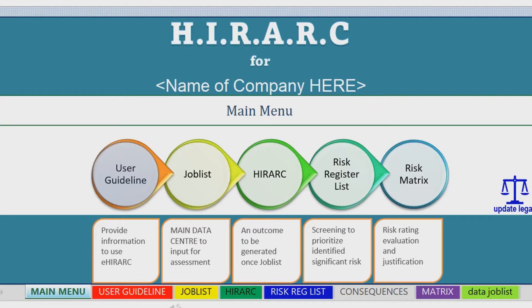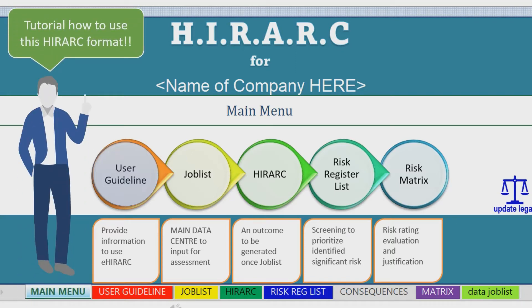HiRAC is a compound word made up of three consecutive activities running one after the other. The activities consist of hazard identification, risk assessment, and risk control. Hazard identification is the recognizing of things that may cause injury or harm to a person. This video clip will provide you a brief tutorial on how to use the HiRAC.